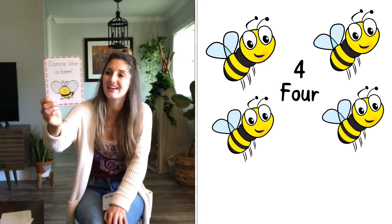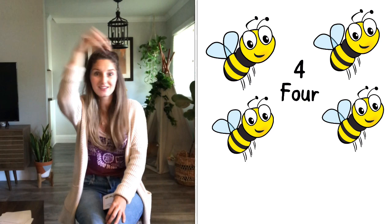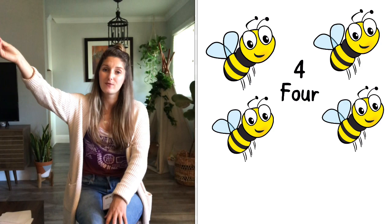Next we have a bee. It says dance like a bee. How many times are we gonna dance? Let's count. One, two, three, four. Four bees. So we're going to dance like a bee. They're very small and they buzz all around the room. Kind of look like they're dancing. So we're gonna dance like a bee four times. One, two, three, four. Good job, friends.